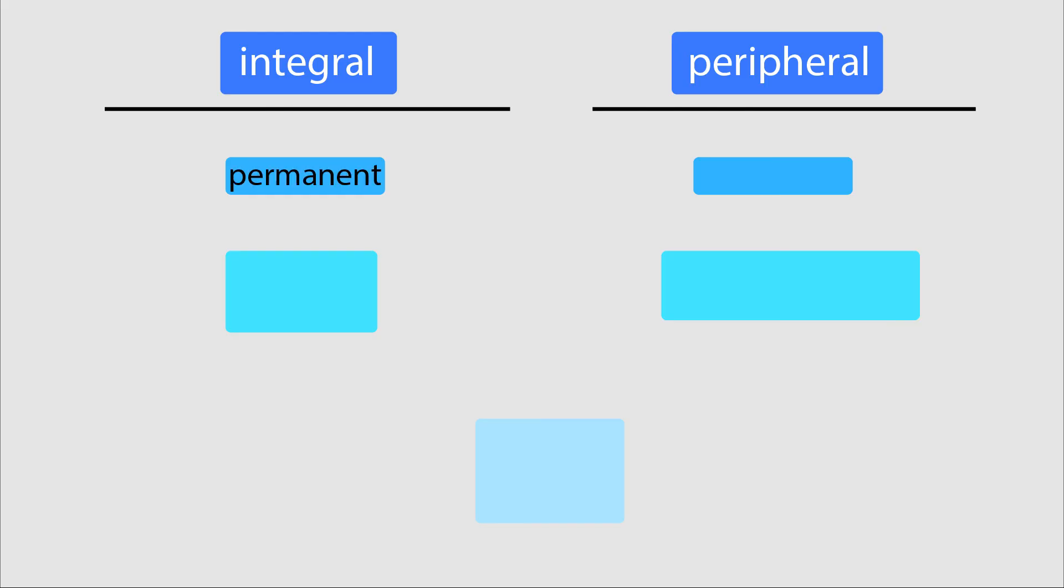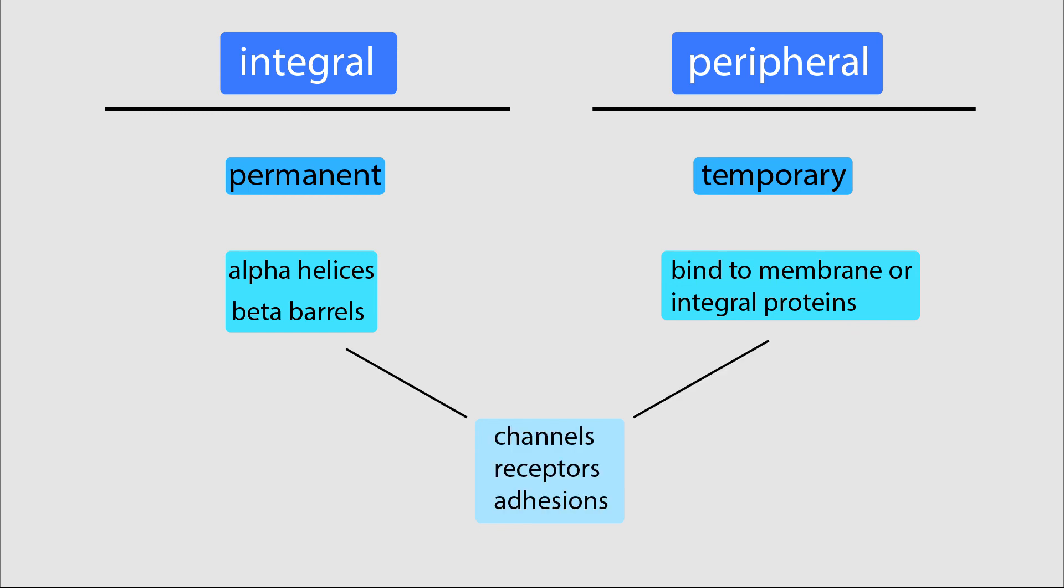Membranes are permanently bound by integral membrane proteins containing transmembrane alpha helices or beta barrels, and temporarily bound by peripheral membrane proteins that attach on one side of the membrane or to integral proteins. Integral and peripheral proteins are important in forming channels, receptors, and adhesions that mediate numerous cellular processes.